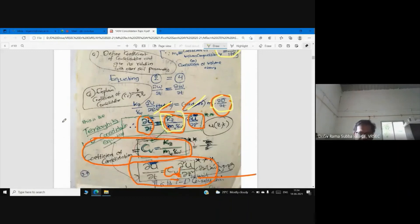What is this one? What is k/(mv times γw)? k by... Cv, the coefficient of consolidation.